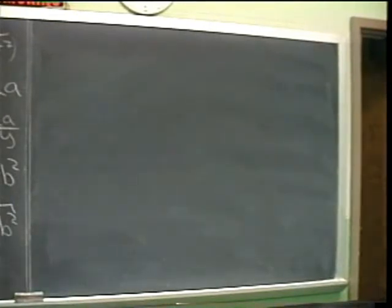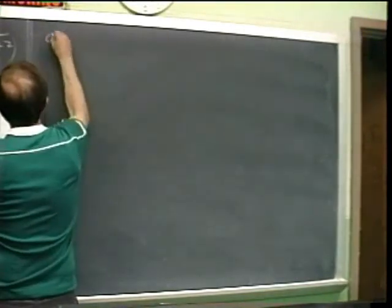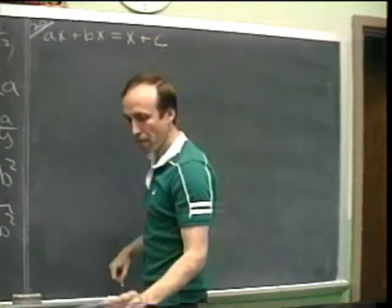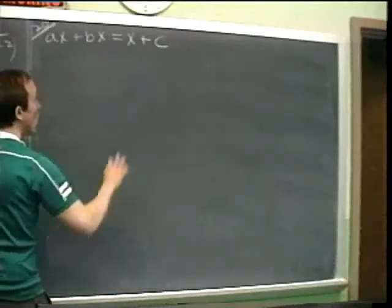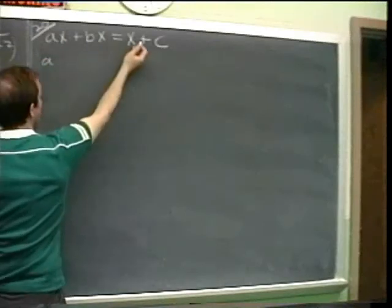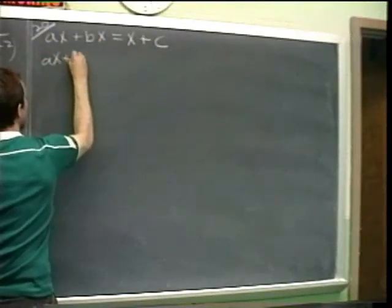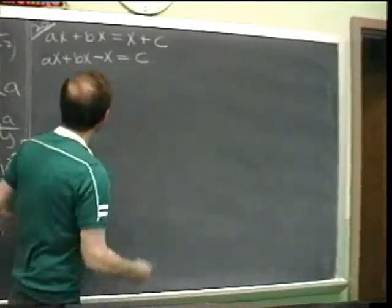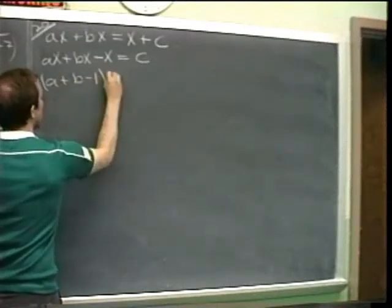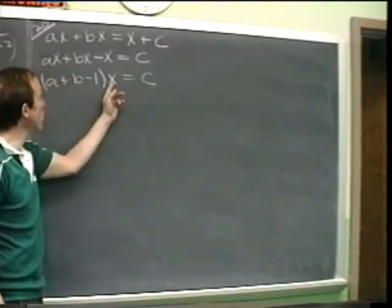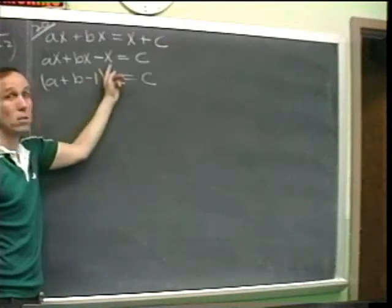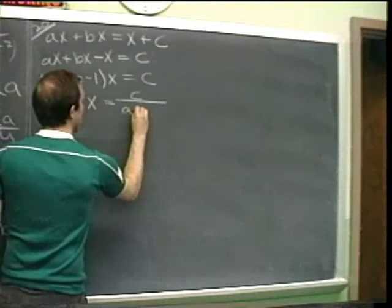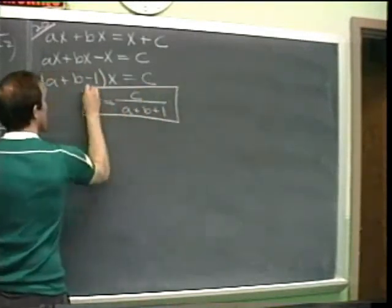Number 20: ax plus bx equals x plus c; solve for x. Get all x's together on one side and everything else on the other. Subtract x from both sides. Every term on the left has an x, so factor out the x: (a plus b minus 1) times x equals c. Check that step: multiplying back gives ax plus bx minus x, exactly what we had. Solve for x by dividing both sides by what's multiplying x: x equals c divided by (a plus b minus 1).